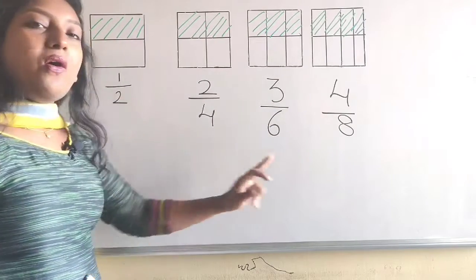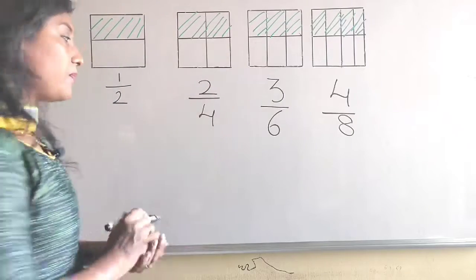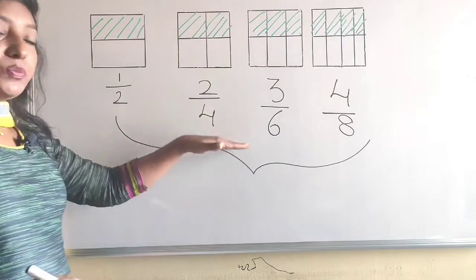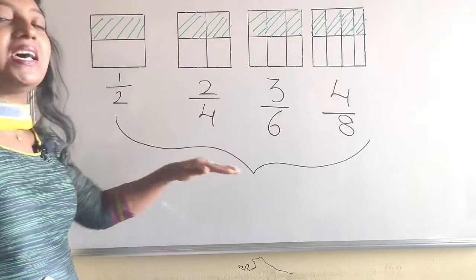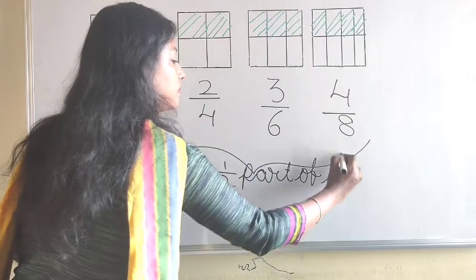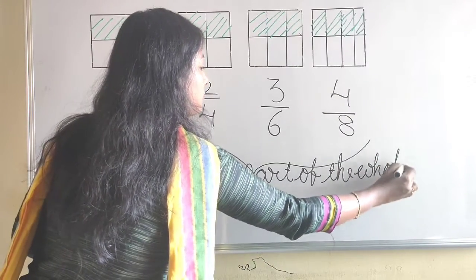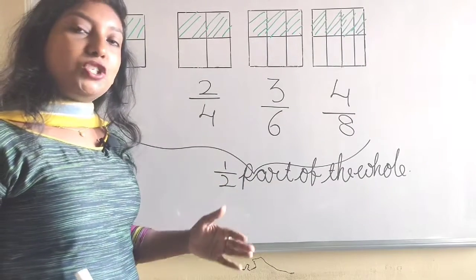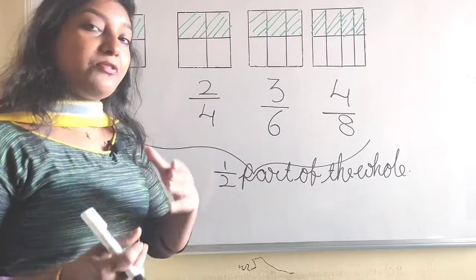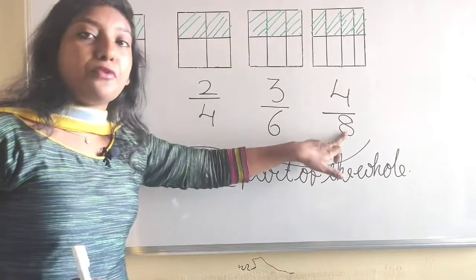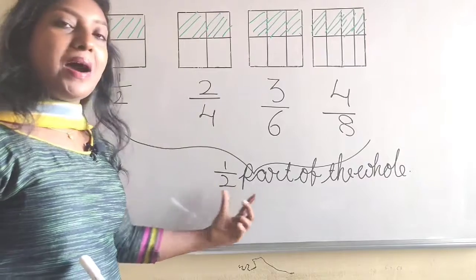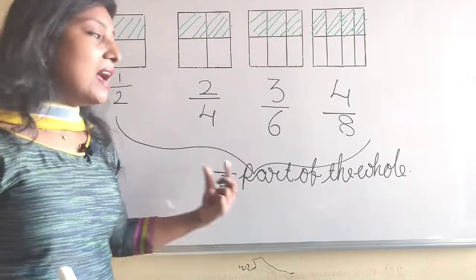If we observe, these all represent the half part of the whole. The fractions 1 by 2, 2 by 4, 3 by 6, and 4 by 8 all represent the half part of the whole. The fractions that show the same part of the whole are called equivalent fractions. So 1 by 2, 2 by 4, 3 by 6, and 4 by 8 are called equivalent fractions because these all show the same part of the whole — half part of the whole.